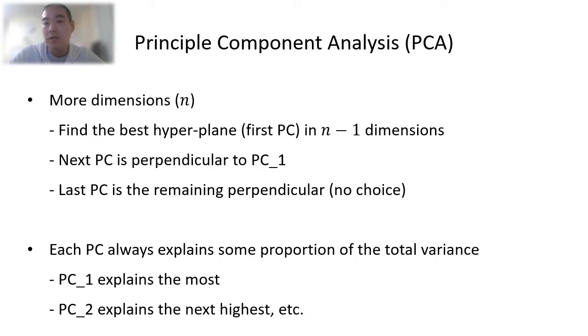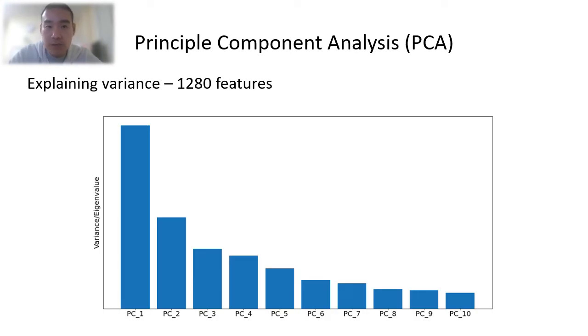And next, we can make a plot and then see how much each Principal Component explains the proportion of the total variance. So in a simpler way, how much each Principal Component explains our data. So here is a plot of the PCA result using the previous cellular image example. We can see the first Principal Component explains the most, and the second Principal Component explains the second highest.